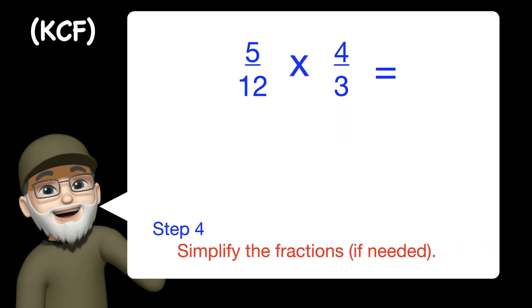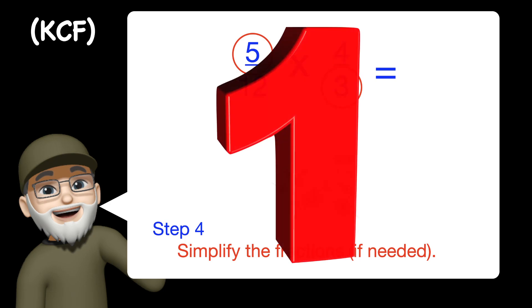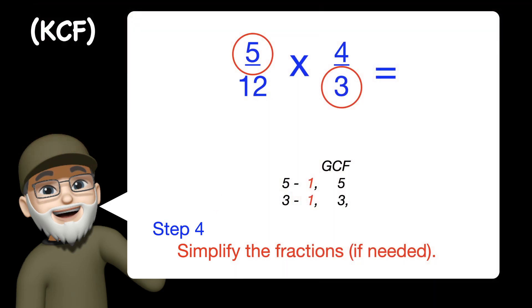You can multiply. I like to simplify now because it's easier to do it now than later. So 5 and 3 will not simplify because they share a greatest common factor of 1. And remember, when you divide by 1, the number stays the same.